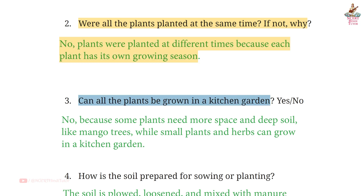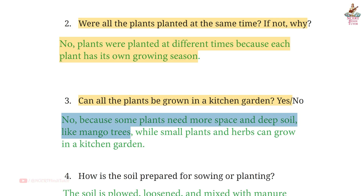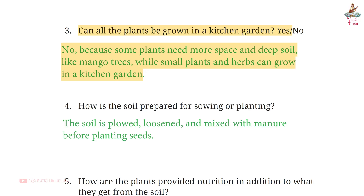Question 3: Can all the plants be grown in a kitchen garden? Answer: No, because some plants need more space and deep soil, like mango trees, while small plants and herbs can grow in a kitchen garden.